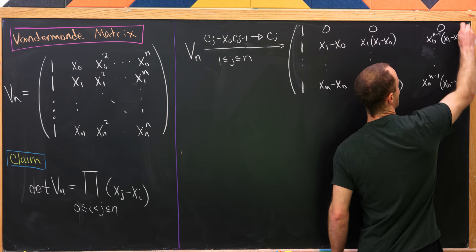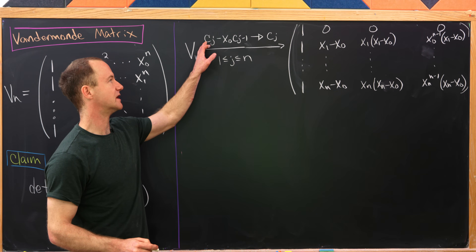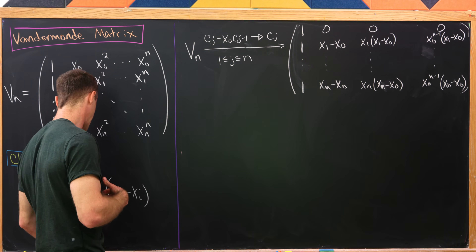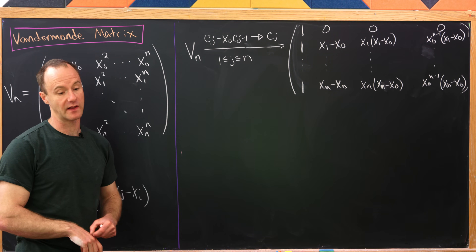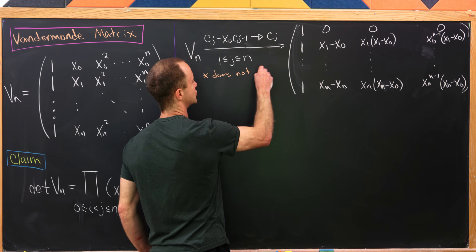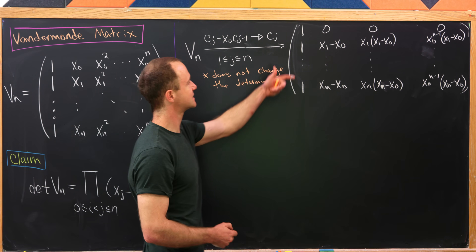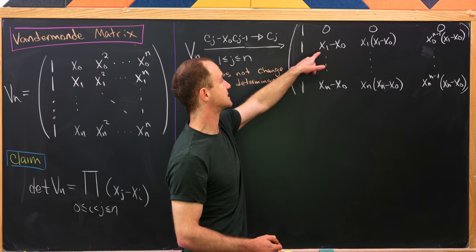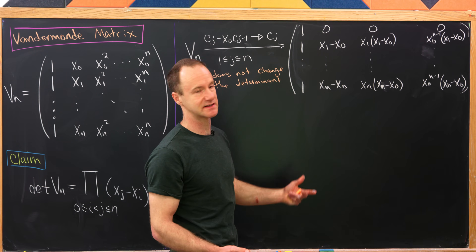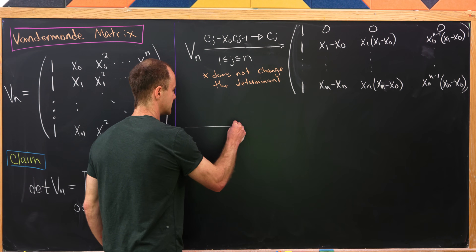That's our first round of column operations. As you may recall from linear algebra, adding a multiple of one column to another does not change the determinant — it's perhaps surprising, but it works out. So this operation does not change the determinant. Now we notice every term in row 1 has a factor of x1 minus x0, every term in row 2 has a factor of x2 minus x0, and so on down to row n having a factor of xn minus x0.